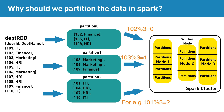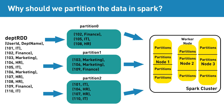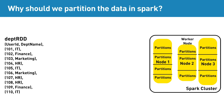When the join operation happens, it now knows which partition will hold the value for which key. This reduces lots of unnecessary network shuffling and improves the performance.